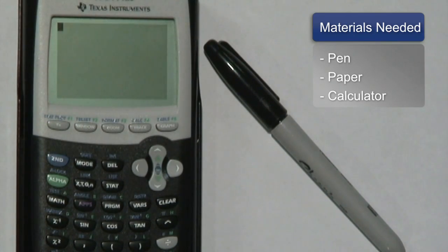Now all you really need to find a quotient in mathematics is a pen, a piece of paper, and a calculator if you need it.